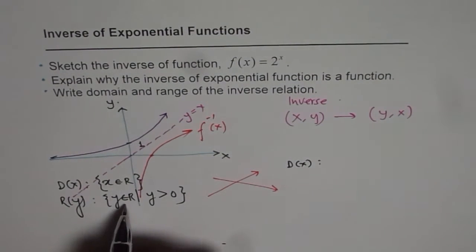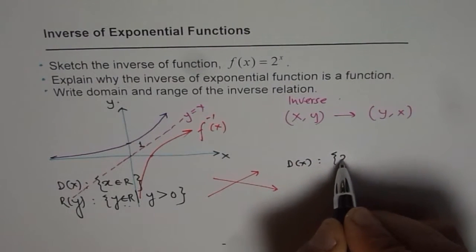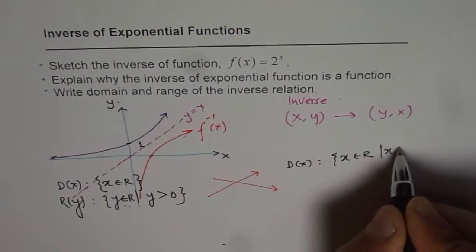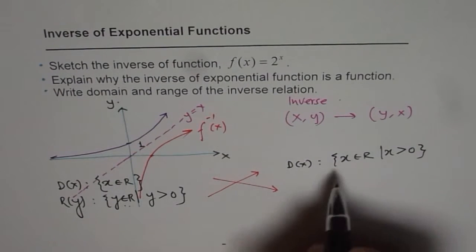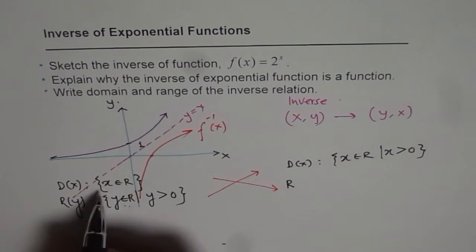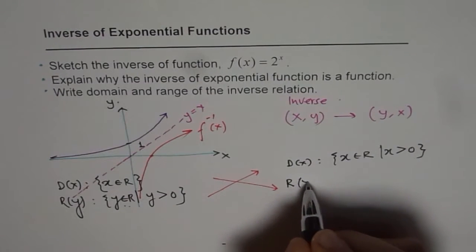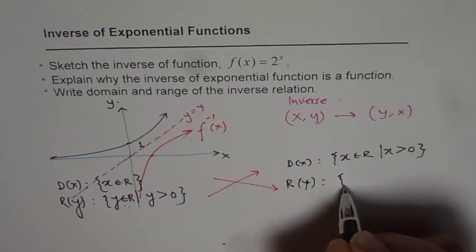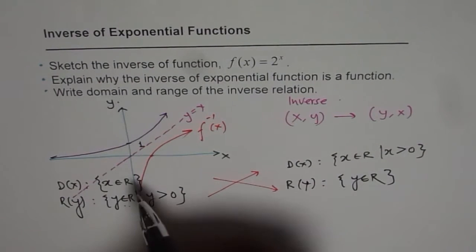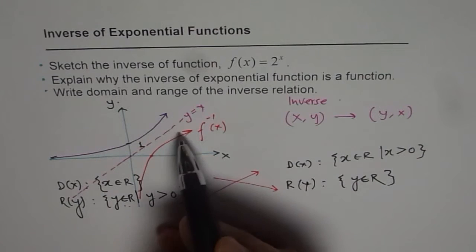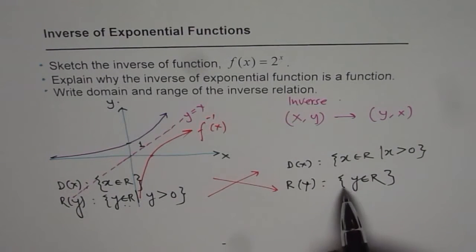The domain of the inverse function is x belongs to real numbers where x > 0. Earlier it was the range; range becomes the domain. And the earlier domain becomes the range of our inverse function. There is no restriction on the range this time—it goes from negative infinity to positive infinity. That is how we can figure out the domain and range of the inverse function.